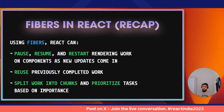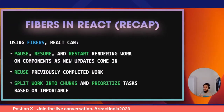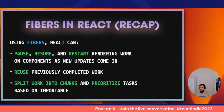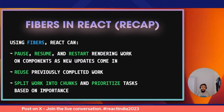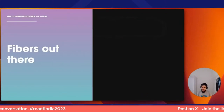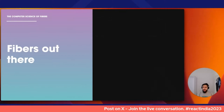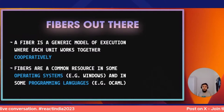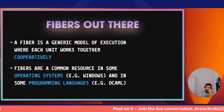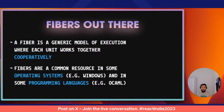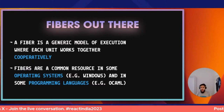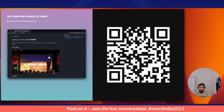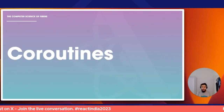To recap: using fibers, React can pause, resume, and restart rendering work as new updates come in, reuse work completed in the past, and split work into chunks prioritizing tasks by importance. It's also interesting that fibers exist in the wild — this generic model of execution where units of work cooperate appears in some operating systems, programming languages like OCaml, and even libraries like Effect-TS, which I definitely recommend checking out.